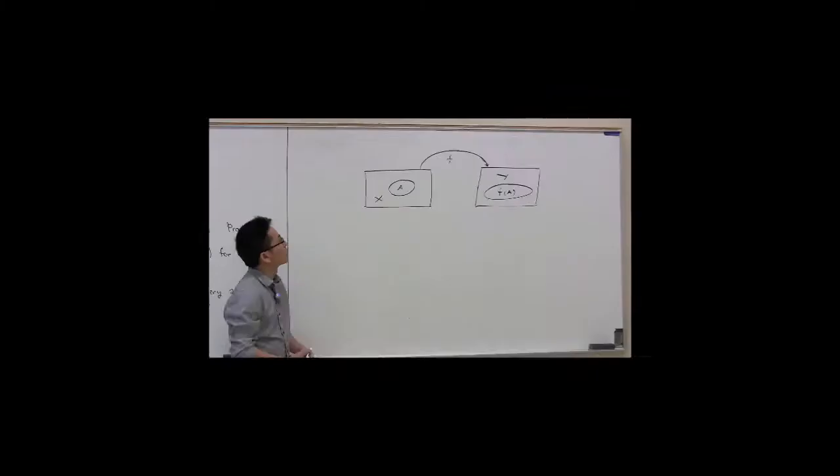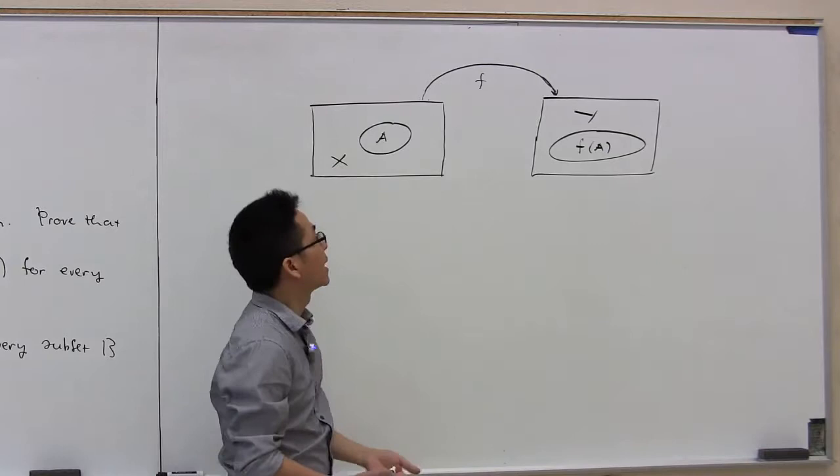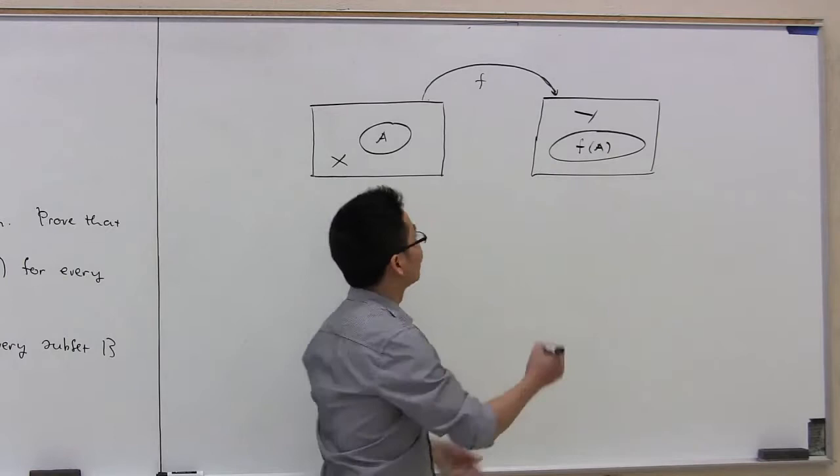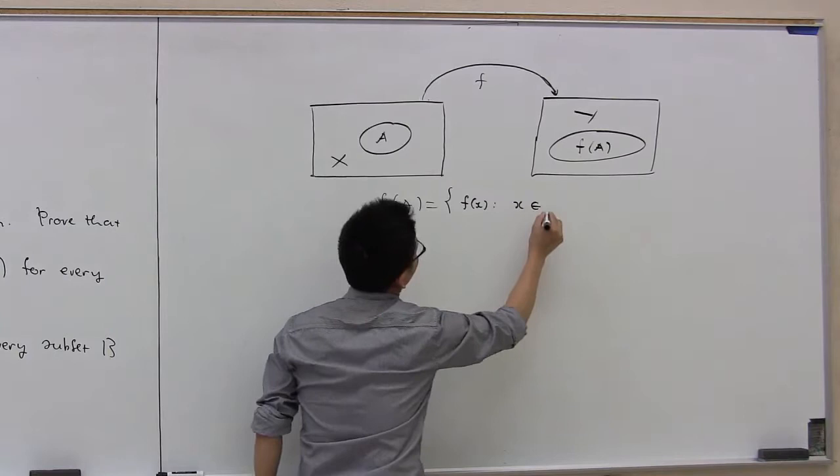In order to solve this problem, we need some important concepts: the image of a set under a function, the inverse image of a set under a function, and also 1-to-1 functions and onto functions. Let me go ahead and recall those concepts before solving the problem. Let f be a function from X to Y, and A is a subset of X. The image of A under f is a subset of Y, and it is defined as f of A — the set of all f of x as x runs in A.